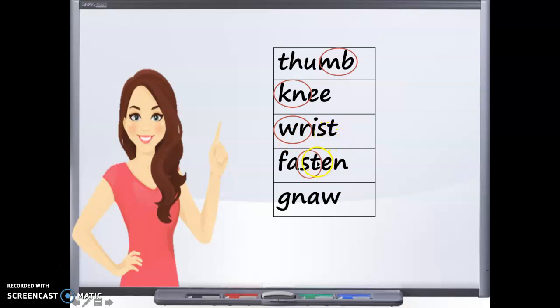Let's take a look at the last word on our list. Gnaw. Say that one with me. Gnaw. Which sound do you not hear? Or which letter do you not hear in the word gnaw? If you said G, you were correct. G and N work together to make the N sound. Therefore, the G is silent and it doesn't say its name.